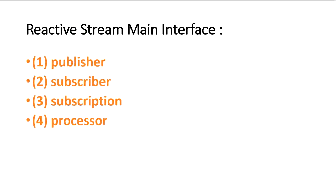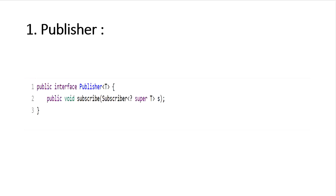There are four main interfaces of reactive streams. The first is Publisher, which is used to publish an event. The second is Subscriber, used to subscribe to an event. The third is Subscription and the fourth is Processor. Starting with the Publisher interface: Publisher is a data source that always publishes an event. This interface contains only one method, which is subscribe. If a subscriber wants to interact with the publisher, it needs to invoke this subscribe method, passing the subscriber instance as a parameter.